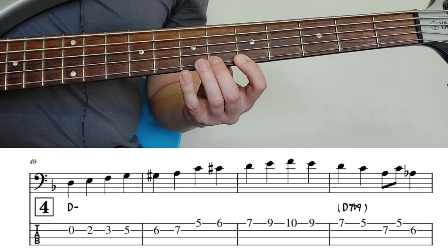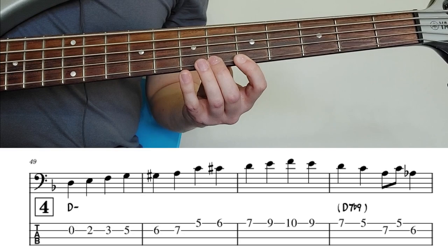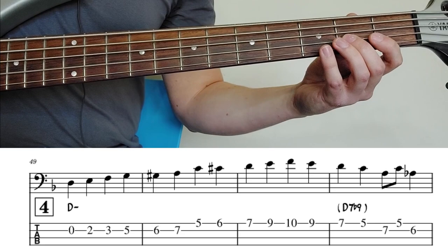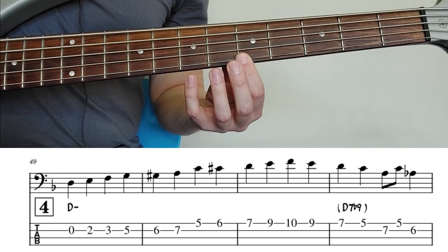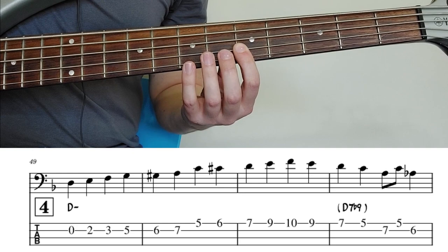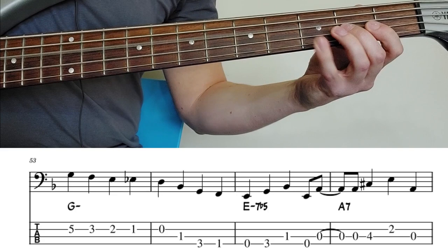Now we're going to walk up the bass through a couple of positions. This is probably the way that I would play this passage. You can play it like this: use open G, G sharp, and then shift. But I think it's a bit more natural to shift here and play the G on the fifth fret. And then shift again. Shift back.